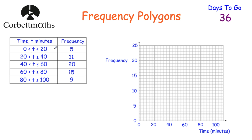So if we want to draw a frequency polygon, we plot the frequencies at the midpoint of each category. Between 0 and 20, that's going to be 10 minutes and the frequency is 5, so we do a little x there. Next, between 20 and 40, the midpoint is 30 and the height is going to be 11. In terms of the axes, there's 5 on the y-axis and there's 10 little squares, so each little line is 0.5. For 11, we go from 30 up to just above 10 — that's 11. Next, 40 to 60, so the midpoint is 50 and the frequency is 20, so 50 across and 20 up. Then 60 to 80, so 70 across and up to 15.